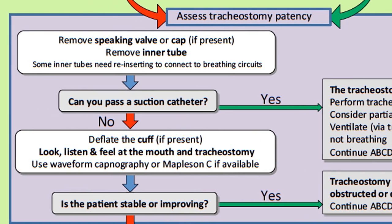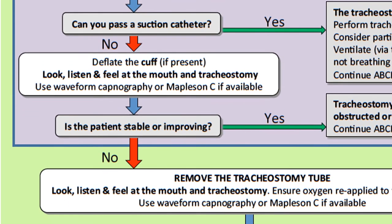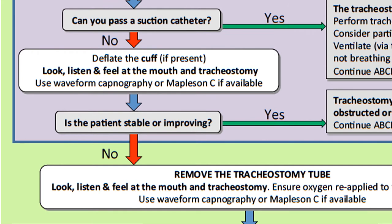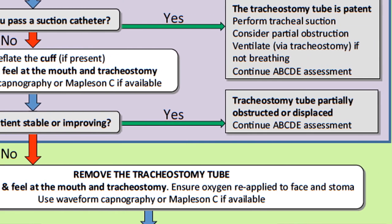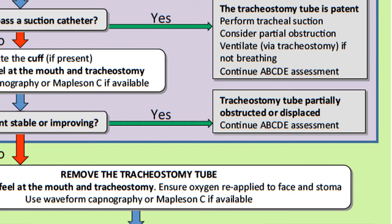If the suction catheter doesn't pass, then the tube is blocked or displaced. You would then move on to the second step in assessing patency of the tracheostomy tube. To do this, you will first have to deflate the cuff of the tracheostomy and look, listen and feel again at the face and the tracheostomy. You might feel air flowing around the tracheostomy tube from its insertion site at the neck. You can use the Mapleson C circuit or waveform capnography to assess for signs of breathing. If deflating the cuff improves the patient's clinical condition, this suggests the tracheostomy tube is partially obstructed or displaced — continue with your ABC assessment.